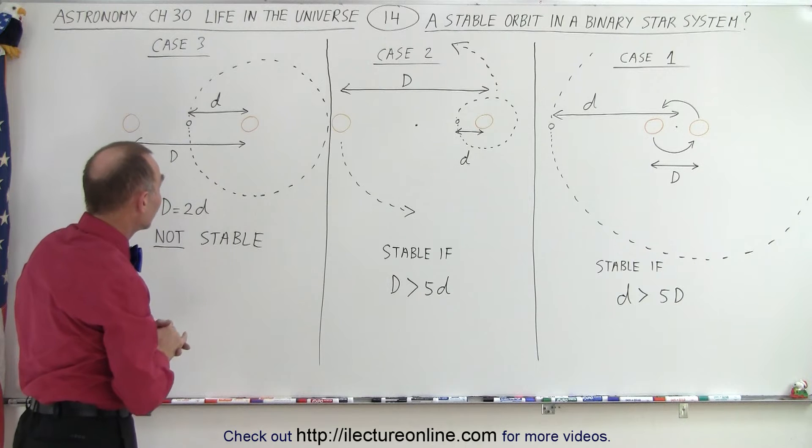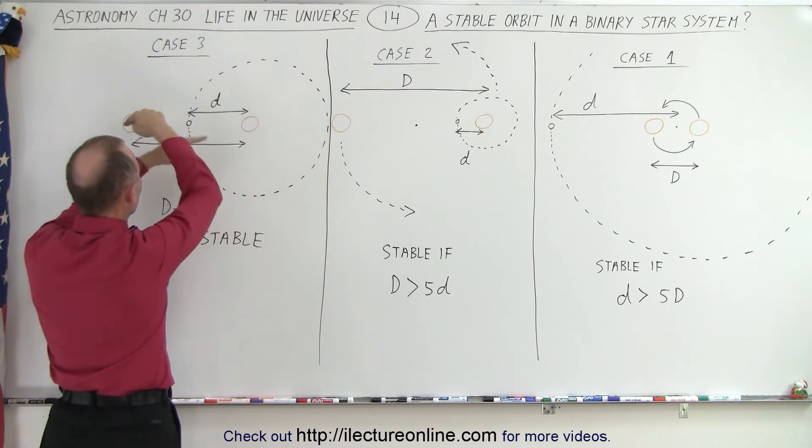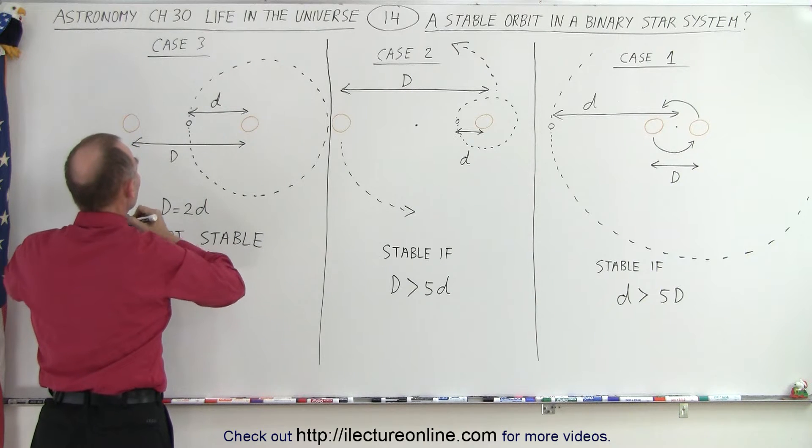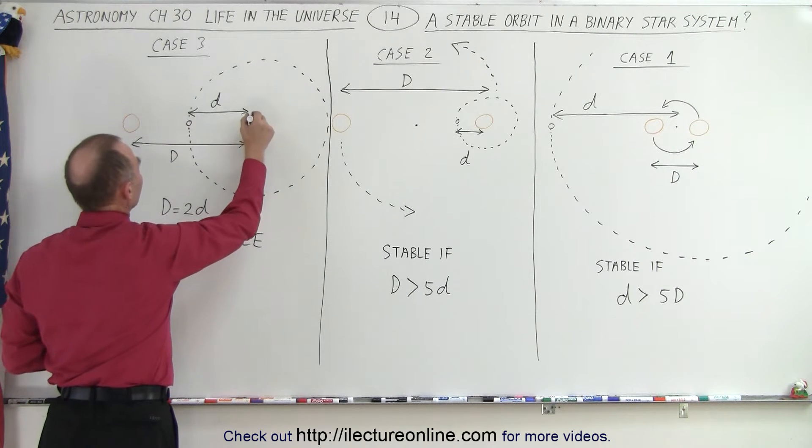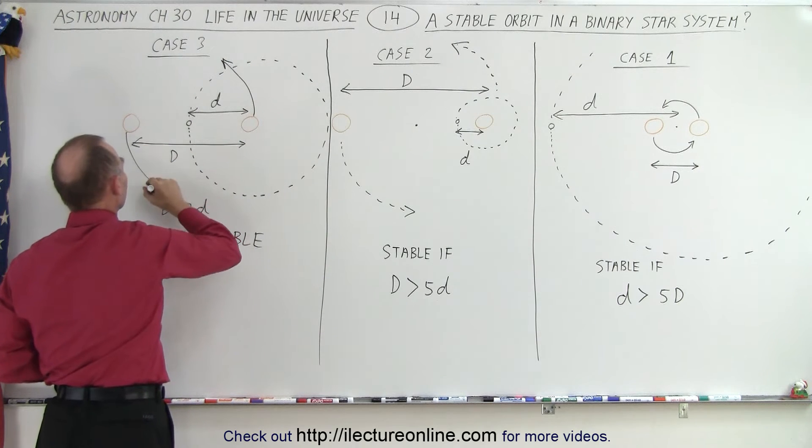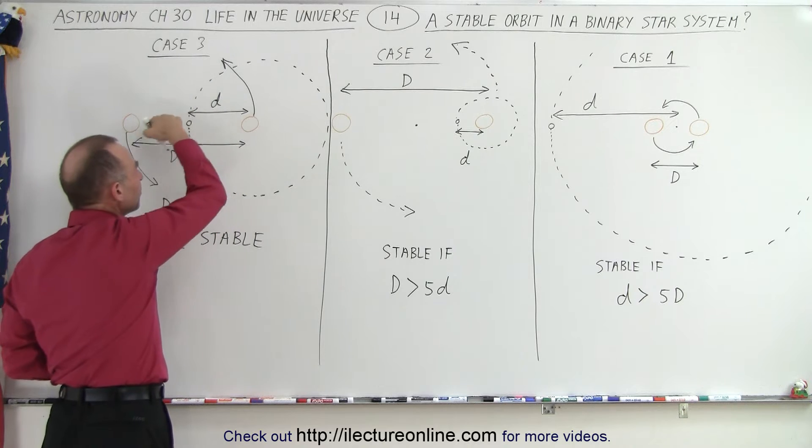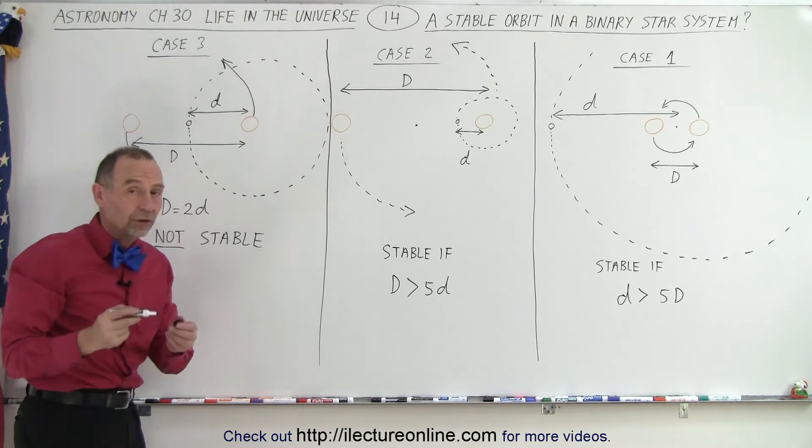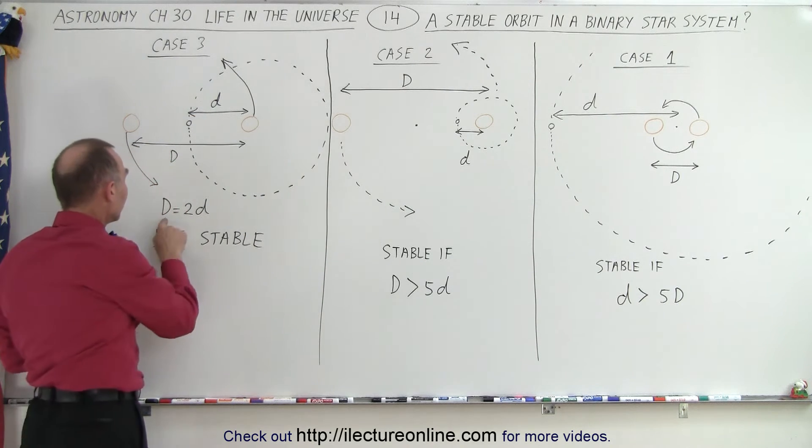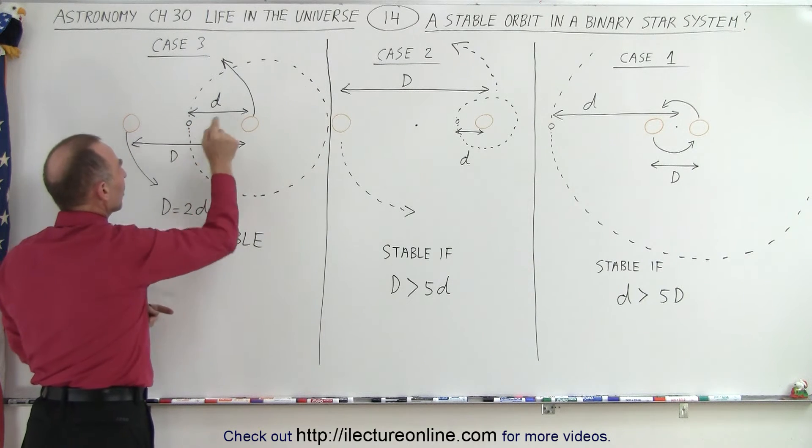Finally, a third case. Here we have the big D, the distance between the two stars, and they would of course be revolving around one another about the barycenter. And we can put the barycenter right there, so this star would be going like this, and this star would be going like this. And let's say that the orbit of the planet places it right in between these two stars in such a way that the distance between the two stars is twice the distance between the planet and one of the stars.